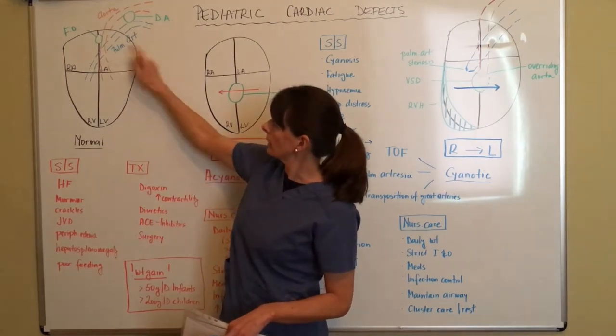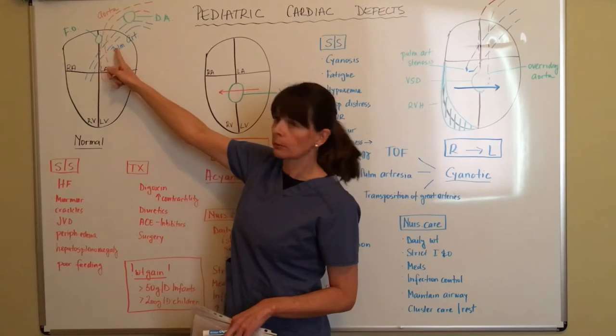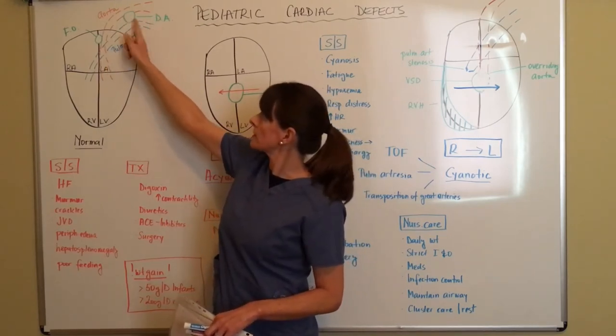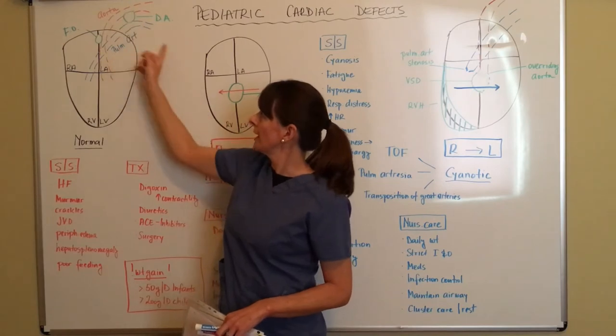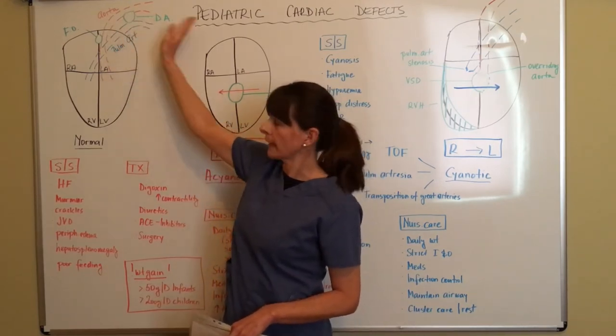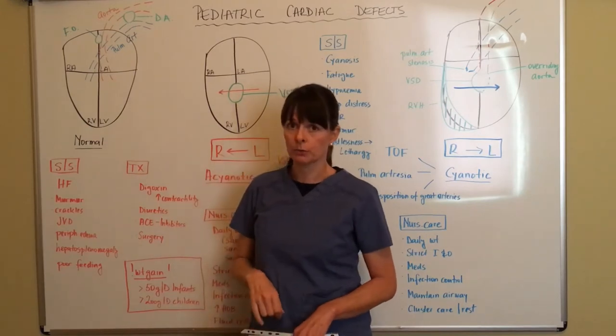And so before it gets to the lungs, even if the blood gets into the pulmonary artery, it will be going over through the ductus arteriosus into the aorta, again, bypassing the lungs and then getting pumped over to the body.